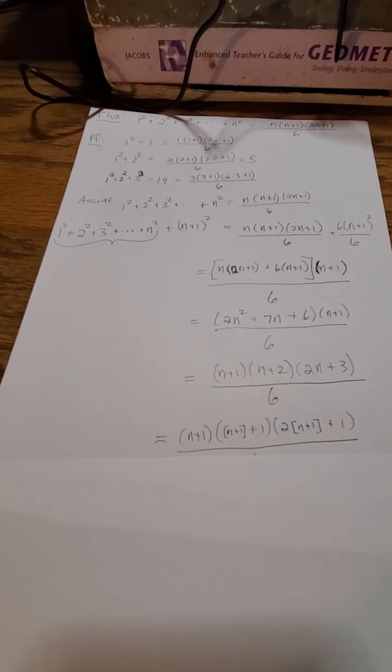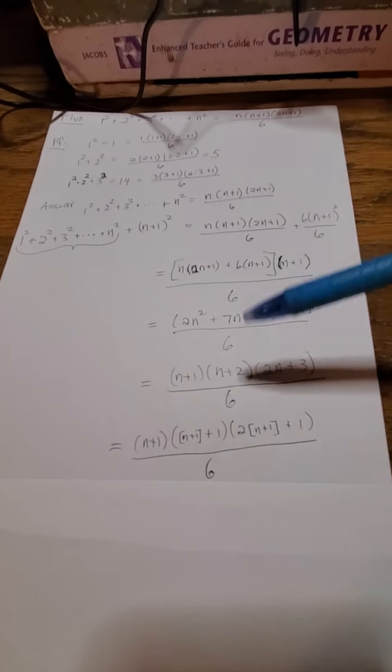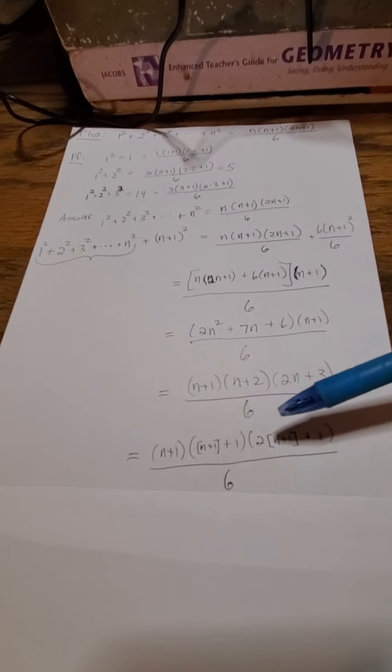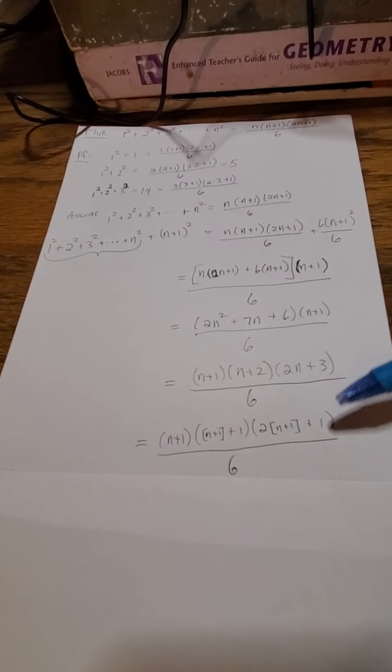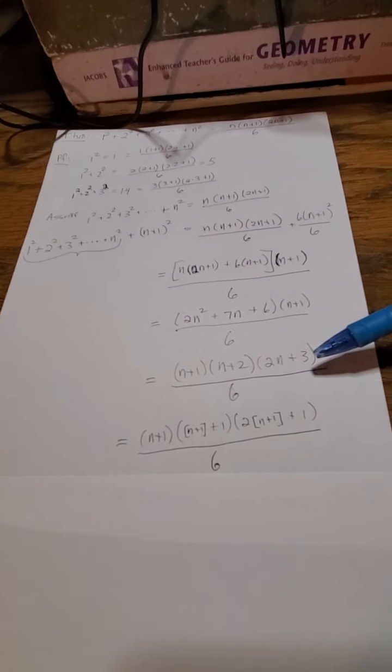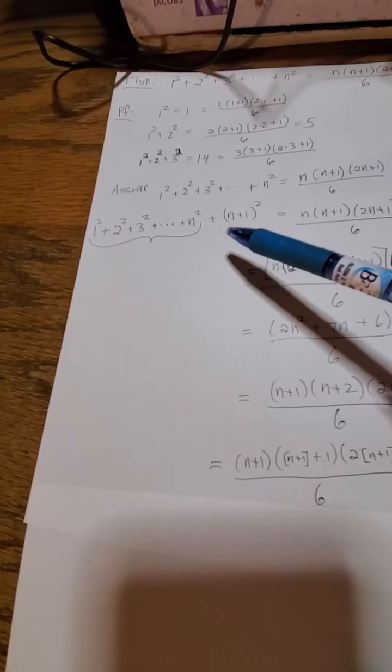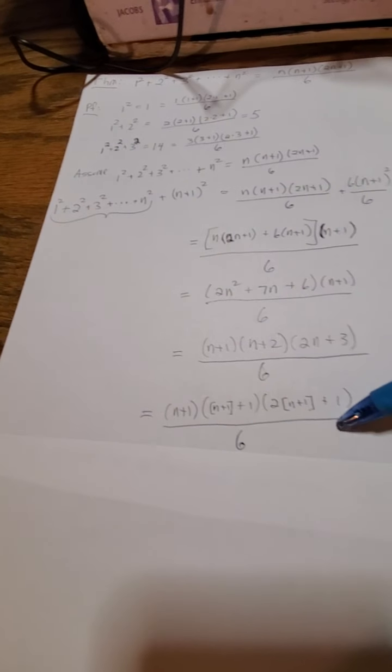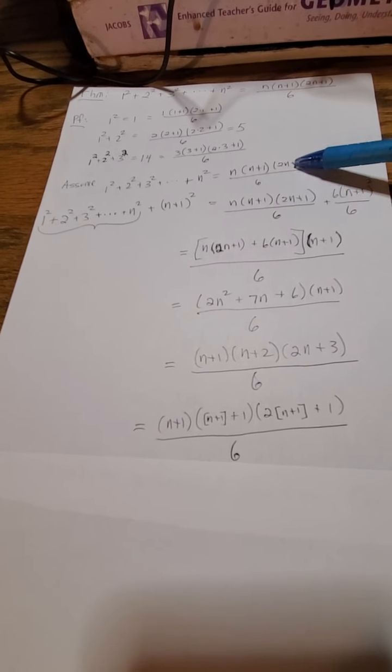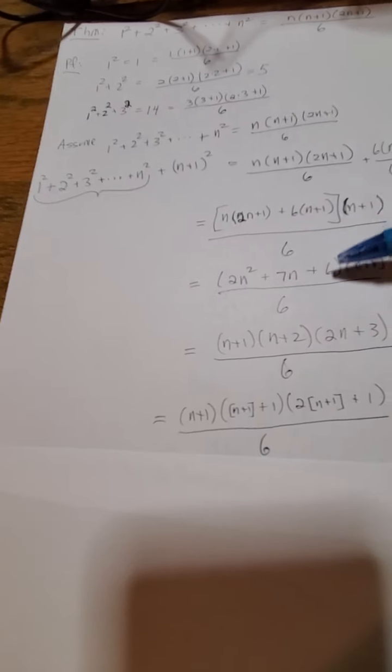But just to really drive it home even more, this is equal to n plus 1 times n plus 1 plus 1, because that's what n plus 2 is, times 2 times n plus 1 plus 1, which is what 2n plus 3 equals. And I've shown that the sum from 1 squared to n plus 1 squared is equal to this, which really falls into the same pattern, it's like basically substituting n plus 1 into n for the original formula.